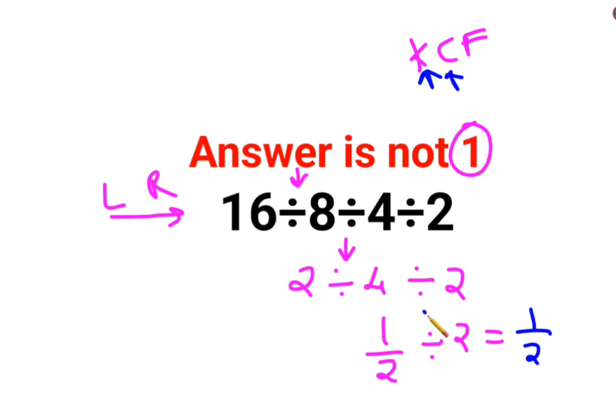C stands for changing the division sign to multiplication. F stands for flipping or taking reciprocal of the next number, which is 2. So reciprocal of that is 1 upon 2.